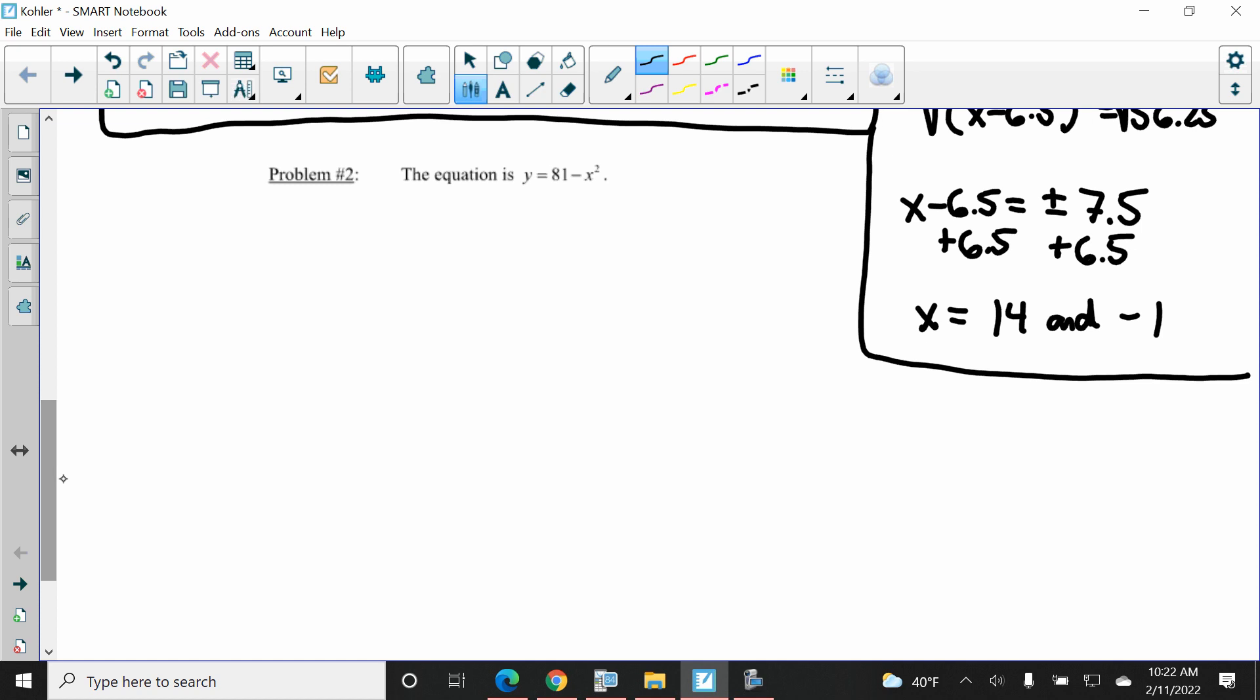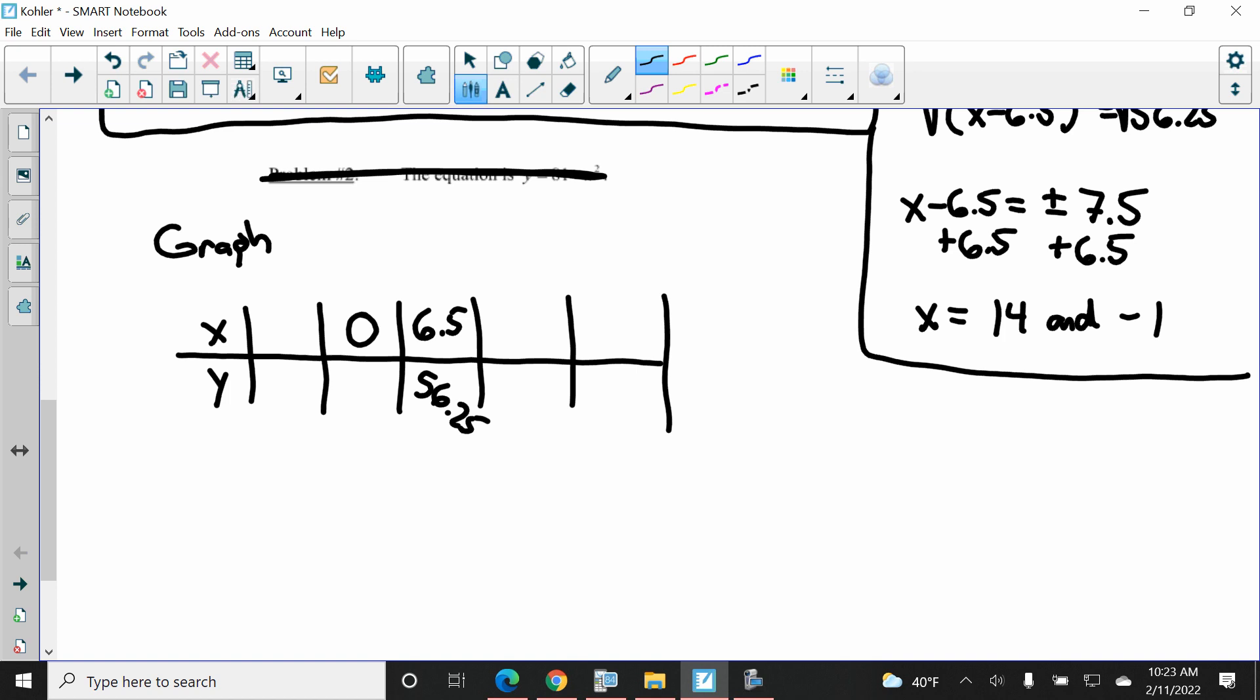And last but not least, I'm going to graph it. Making a table. I'm going to make five spots. I'm going to put my vertex in the middle. My H and my K. I'm going to put my answers in my... I want the Y intercept. That's where X is 0. It's 6.5 places away. Well, 6.5 the other way would make this 13. Just double 6.5.